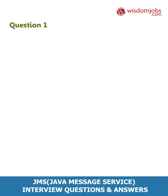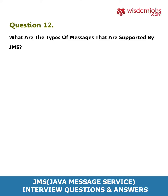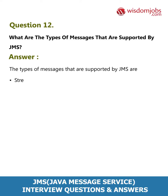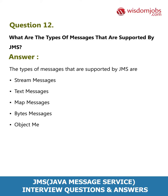Question 12: What are the types of messages that are supported by JMS? Answer: The types of messages supported by JMS are: StreamMessage, TextMessage, MapMessage, BytesMessage, and ObjectMessage.